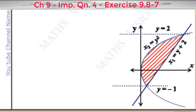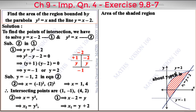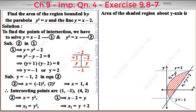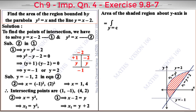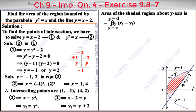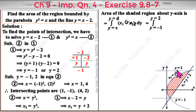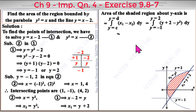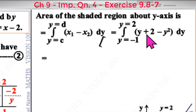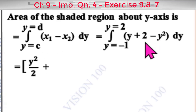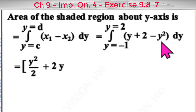The area of the shaded region about the y-axis equals the integral from y equals minus 1 to y equals 2 of (x1 minus x2) dy, where x1 is the right curve (y plus 2) and x2 is the left curve (y squared). This gives: integral from minus 1 to 2 of (y plus 2 minus y squared) dy, which evaluates to [y squared by 2 plus 2y minus y cubed by 3] from minus 1 to 2.